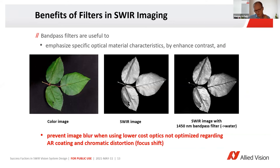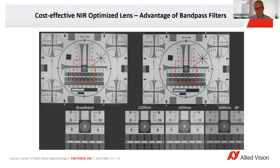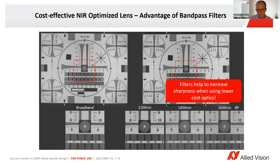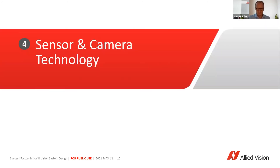A second benefit of the filter is that it allows you to use certain lower-cost optics — not a fully standard visible optic, but for example an NIR optic can, with a certain bandpass filter, still be used in an acceptable way for sphere applications. As an example, here is a standard and an optimized lens with no further modifications. We put on a bandpass filter for 1600 nanometers, and you can see the picture is somewhat sharper. So it's a good way to also use more cost-effective NIR optics.